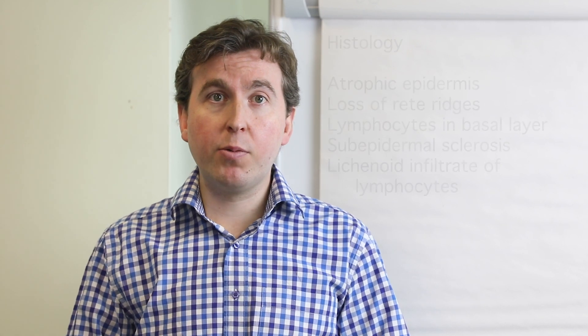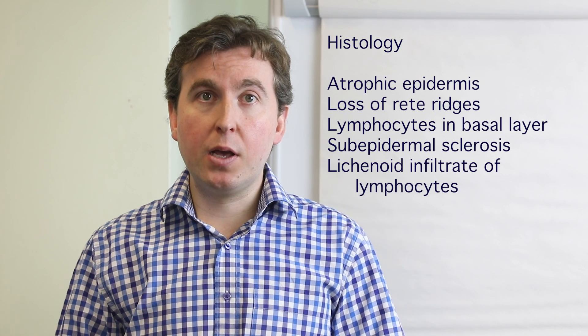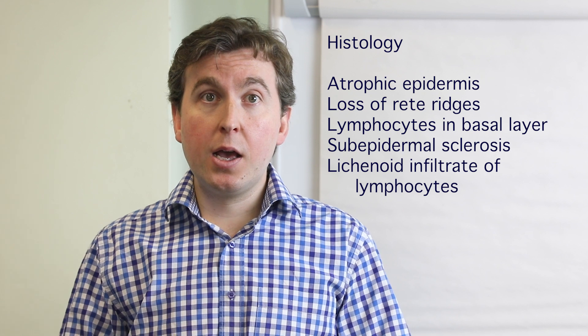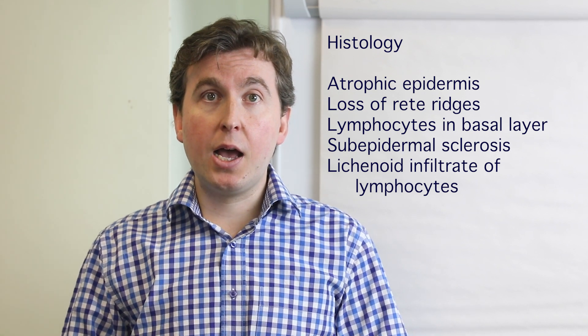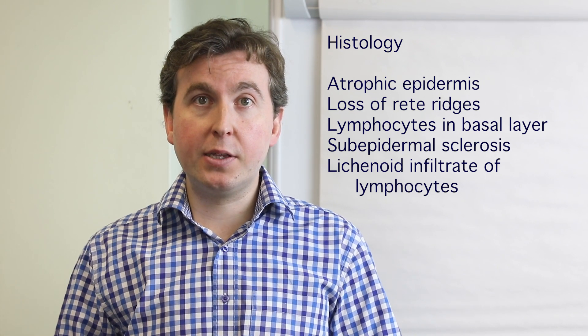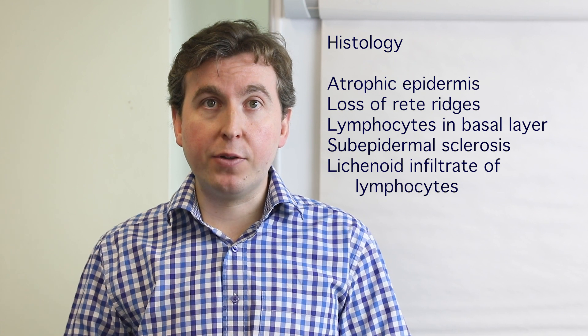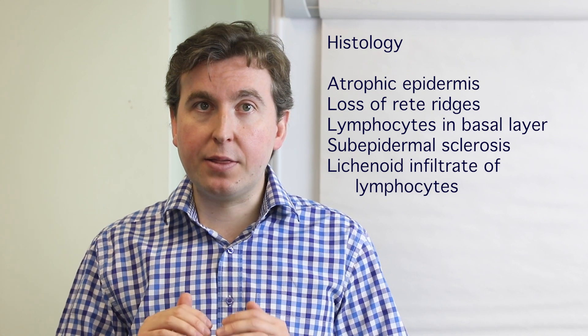It's a chronic lymphocytic mediated skin disease predominantly affecting the vulva and perianal area. The histopathological appearance is one of an atrophic epidermis with loss of rete ridges, some lymphocytes in the basal layer, a sub-epidermal band of sclerosis, and a lichenoid infiltration of lymphocytes beneath that band, which is characteristic of lichen sclerosis. There is an association with other diseases such as thyroid disease or diabetes.